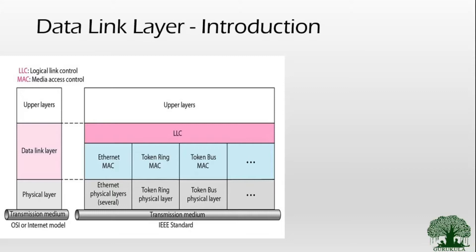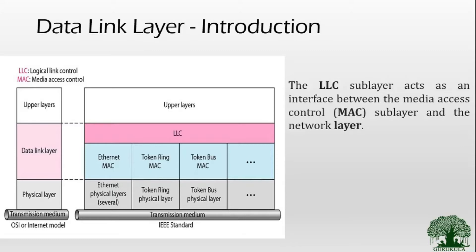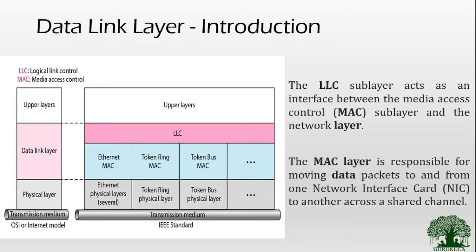The data link layer has two sub-layers. The first is the Logical Link Control sub-layer, or LLC sub-layer. The second is the MAC sub-layer — MAC stands for Media Access Control. The various functions of the data link layer are distributed between these two sub-layers. The LLC sub-layer acts as an interface between the MAC sub-layer and the network layer, while the MAC layer is responsible for moving data packets from one network interface card to another.